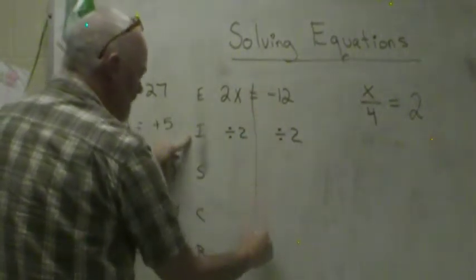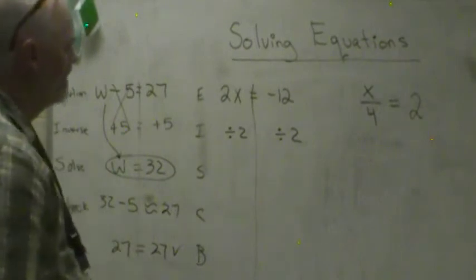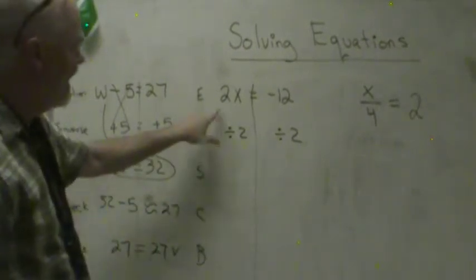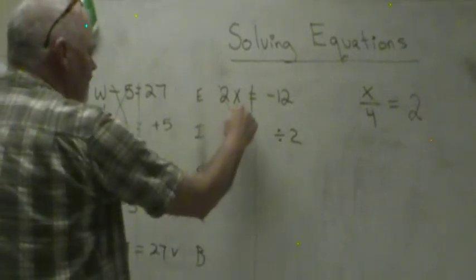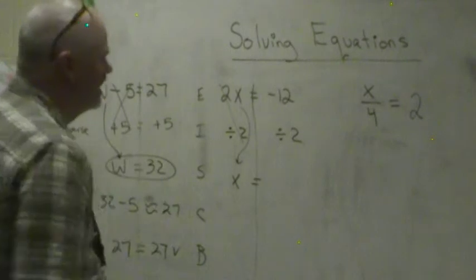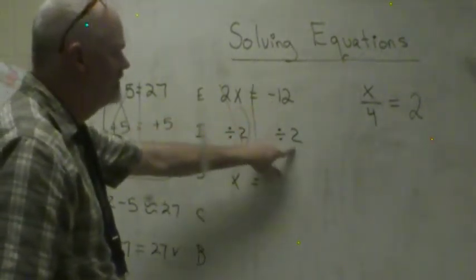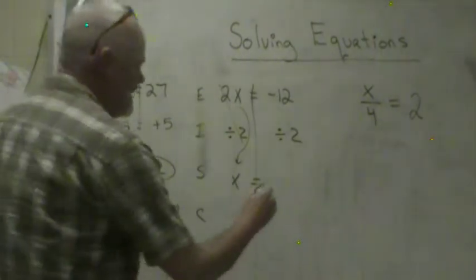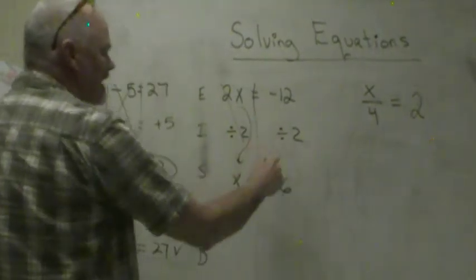I like to draw a line down through the middle. After we divide by 2, these disappear. They're gone. The only thing we're left with is this good old x equals. And then we do negative 12 divided by a positive 2. It's going to give us a negative 6. Remember, a negative divided by a positive.